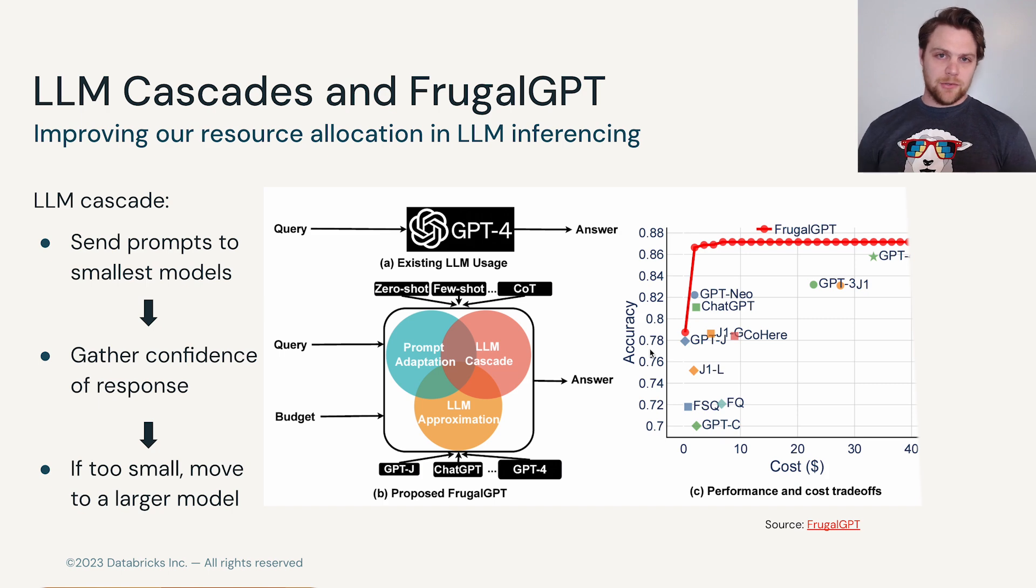In the FrugalGPT paper that was released in 2023, the researchers came up with an approach where they would take a prompt and pass it first to the lowest performing model, and then look at the results of how that model thinks it performed.